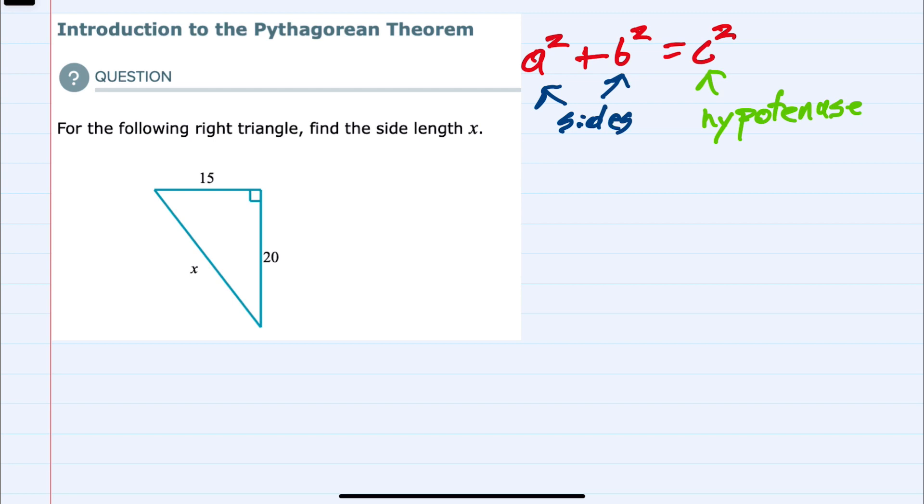When we look at this triangle, we want to start with the right angle. If we look on either of those sides of the right angle, we have our a's and b's, and then directly across from the right angle would be our hypotenuse.